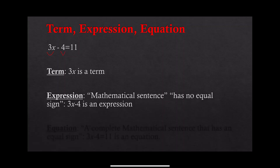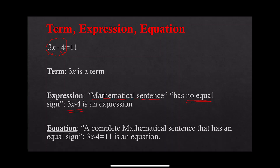An expression is a mathematical sentence that has no equal sign. For example, 3x minus 4 is considered to be an expression. An equation is a complete sentence that has an equal sign. So 3x minus 4 equals 11 is considered to be an equation — an equation always has an equal sign.